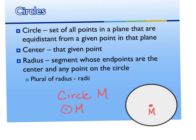I can also draw an example of a radius. The radius goes from the center to any point on the circle, and a radius is usually indicated with a lowercase letter R. Any radii on this picture are all going to have the same measurement. So if the original one had a length of three, then all other radii also would be three. A radius is a segment in the circle.